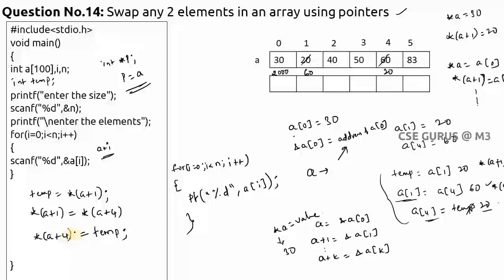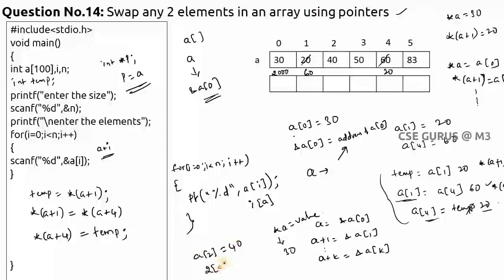Remember: whenever 'a' is an array, 'a' means the address of a[0], also called the base address of the array. One more interesting point: a[i] and i[a] are both equal. For example, a[2] gives 40, and 2[a] also gives 40. Both are acceptable in C.